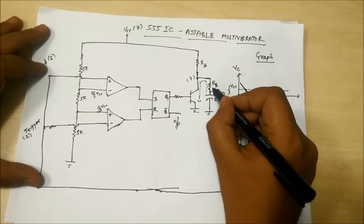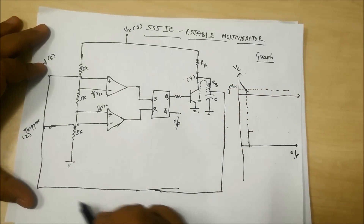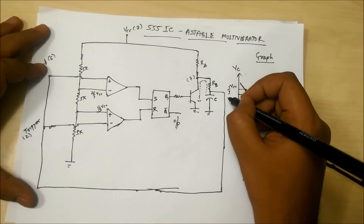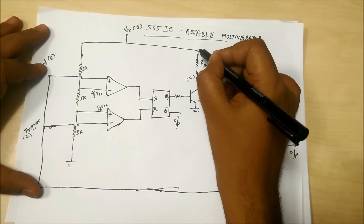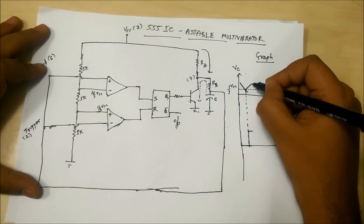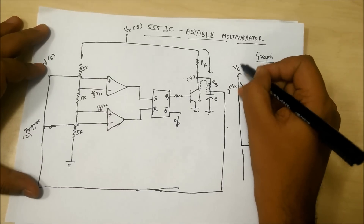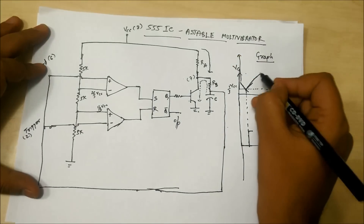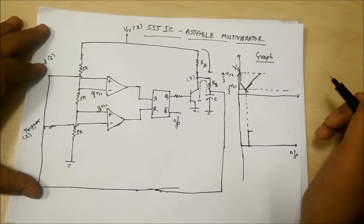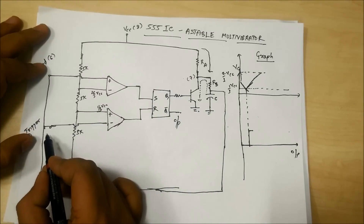When the transistor is shut down, the capacitor has two paths: one through RB, and one into the op-amp, but the op-amp has very high impedance so that path is ruled out. So the capacitor now starts charging through RA and RB. The maximum voltage it can charge to is VCC, but the moment it reaches 2/3 VCC, this voltage reaches both the trigger and the threshold pins.